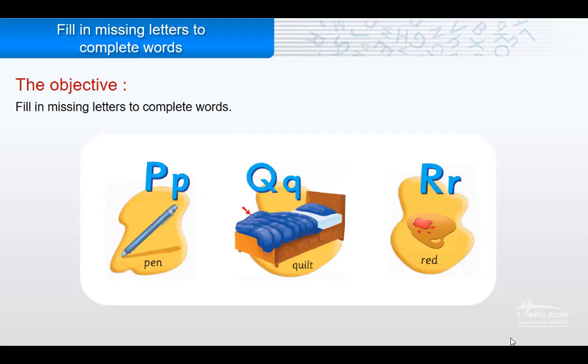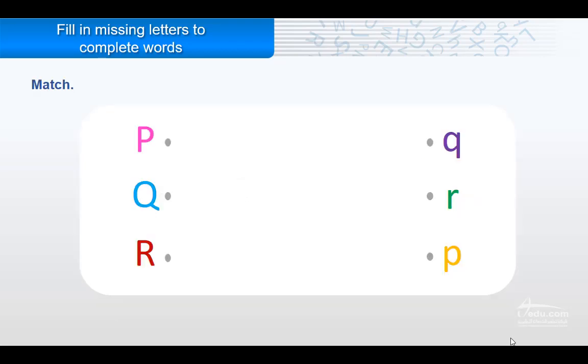Fill in the missing letters to complete words. P, P, Pen. Q, Quilt. R, Ra, Red. Now match the capital letter to the small letter.